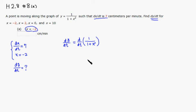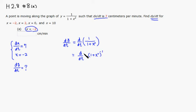Instead of using the quotient rule as done in class, I'll rewrite the function differently. One over (1 + x²) is the same as (1 + x²) to the negative one power. We'll use the general power rule, and then multiply by dx/dt at the end.